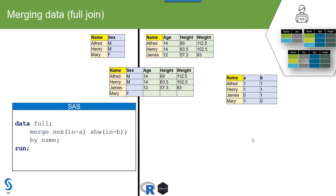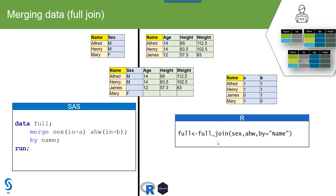To get the same full join result using R, we use the full_join function. We specify the name of the first dataset as the first argument, the second dataset as the second argument, and then the by parameter to specify how to join. Here we are joining based on the values in the name variable, so we specify that in the by parameter of full_join.